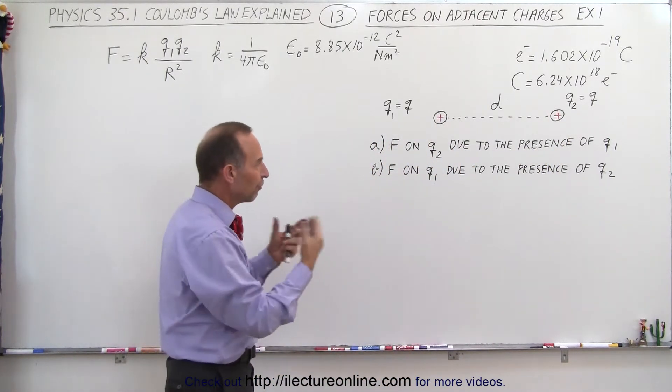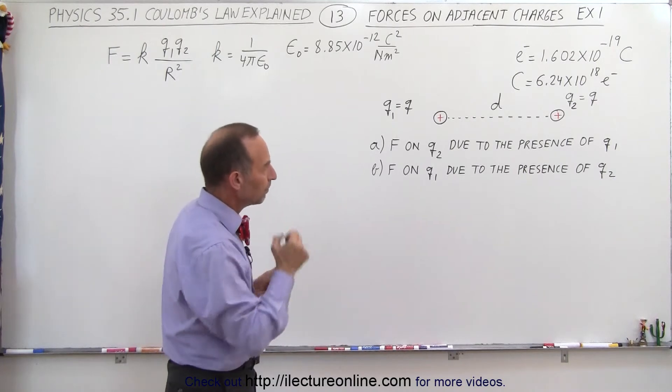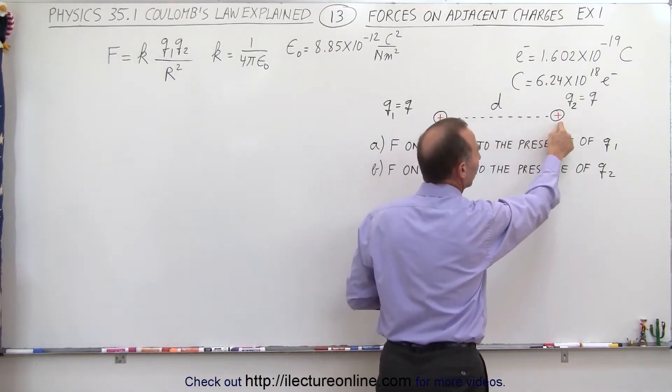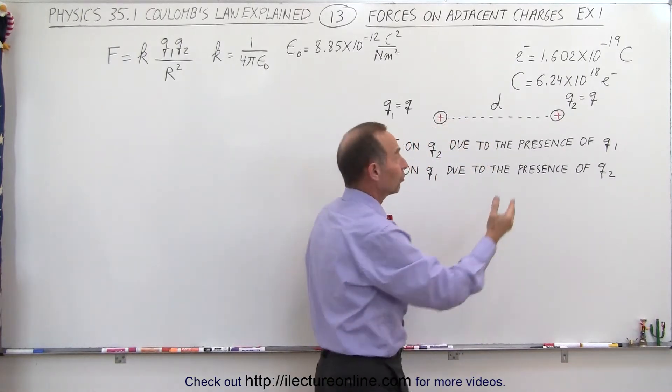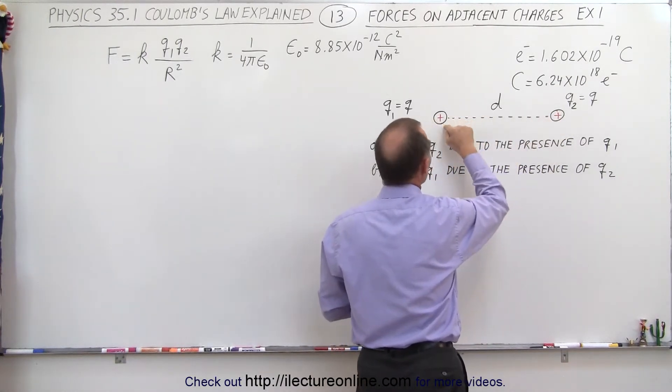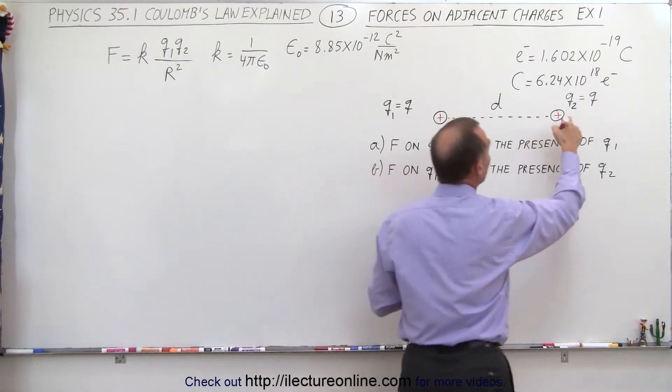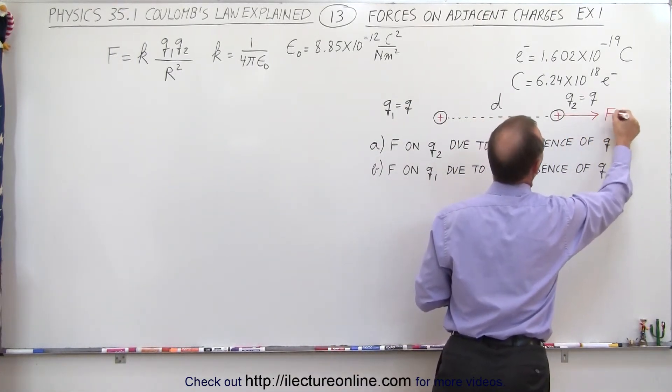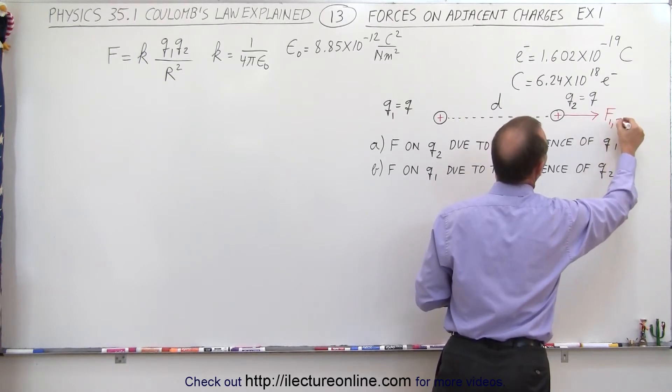Now if we do the first part, part A, and we look at the drawing, we see that there's another positive charge close to this charge right here. So this charge is going to feel the force of repulsion, and that means q2 is going to be experiencing a force in this direction, so we'll call that the force between 1 and 2.